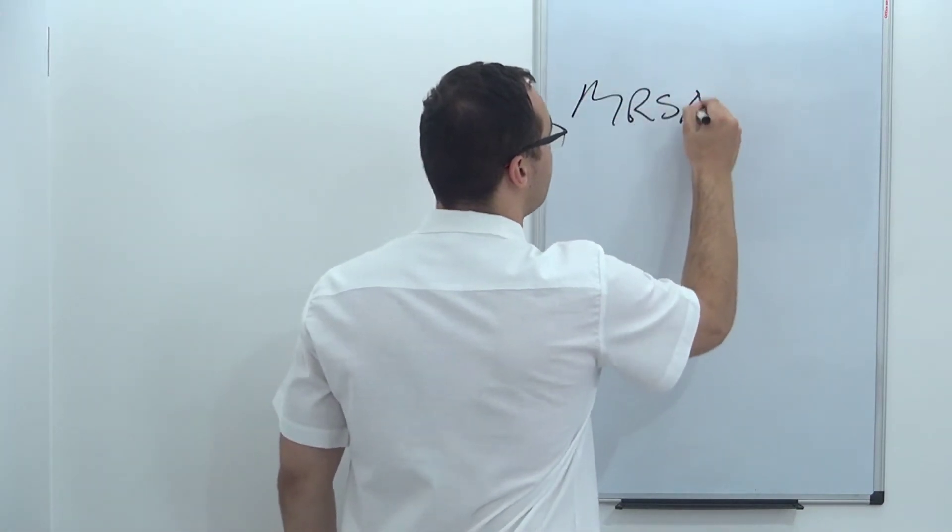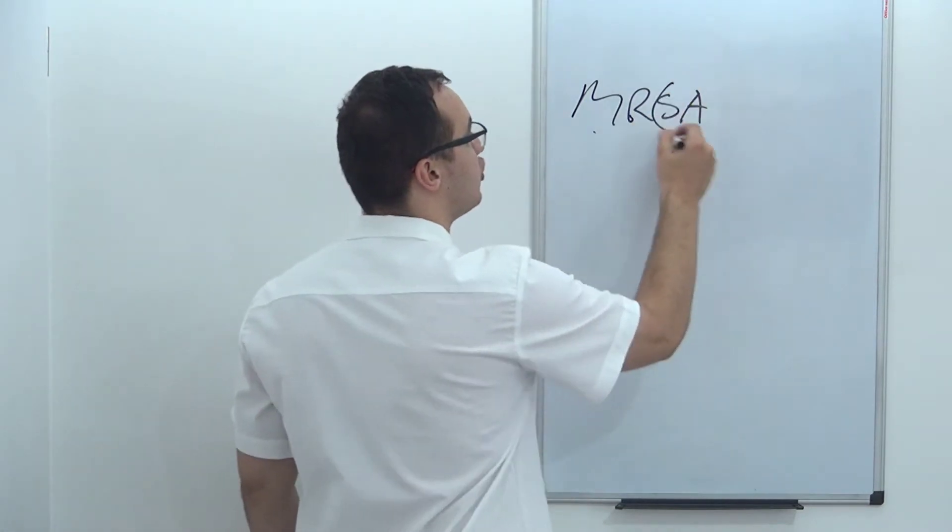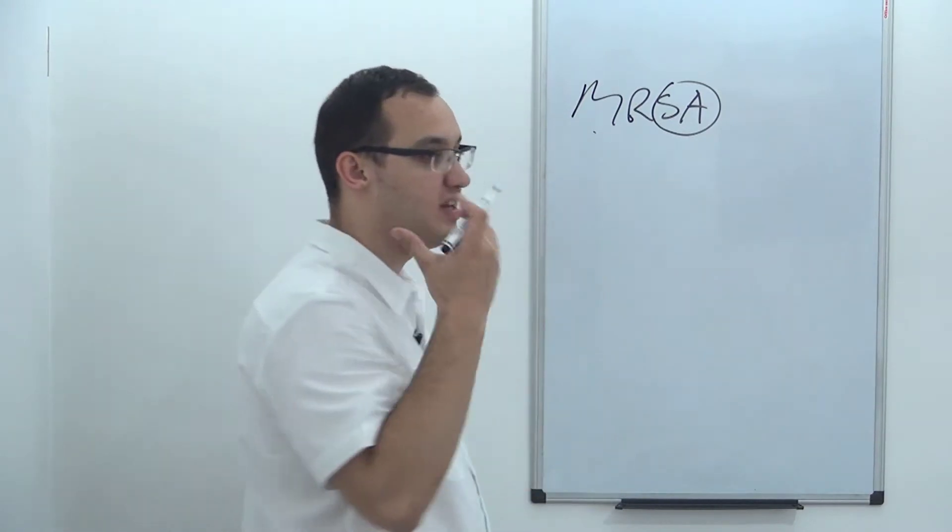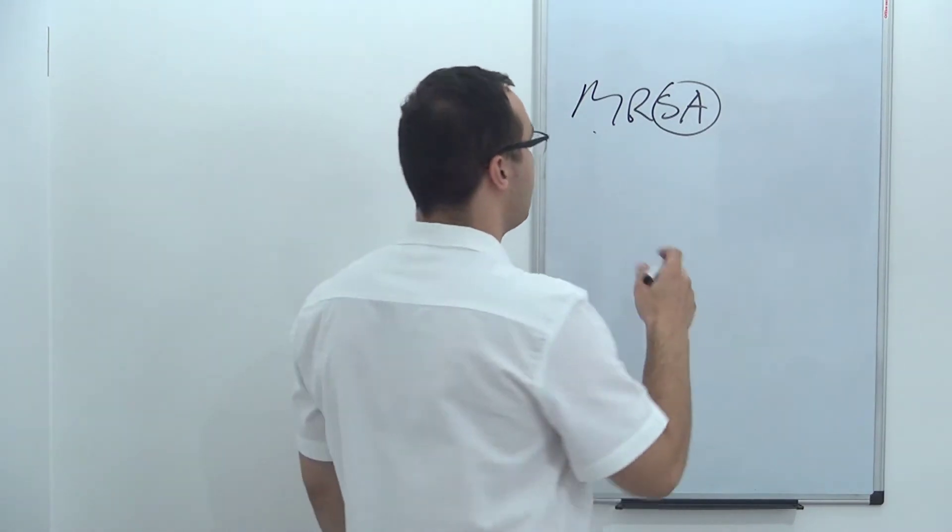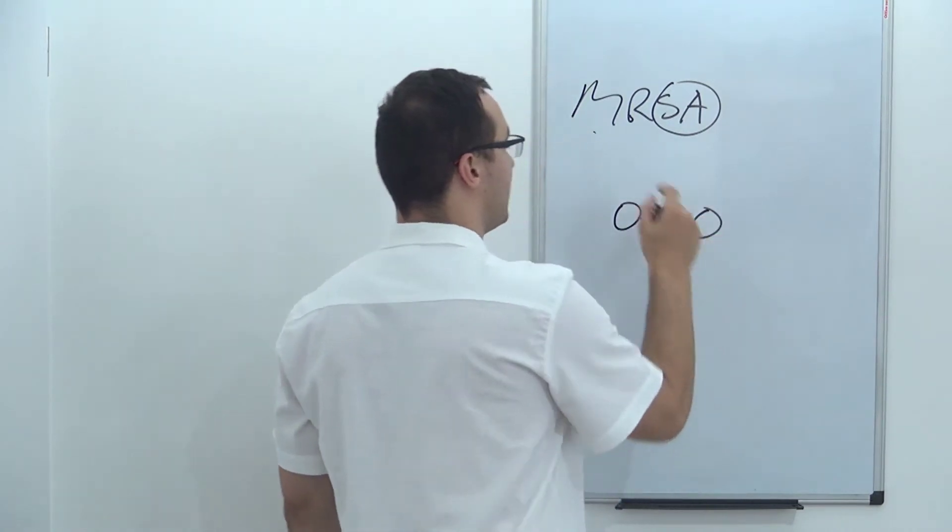MRSA, multi-resistant Staphylococcus aureus, Staphylococcus aureus. This is a bacteria that, as you can see here in the name, cocci, Staphylococci. Cocci are like circles that are connected to each other.